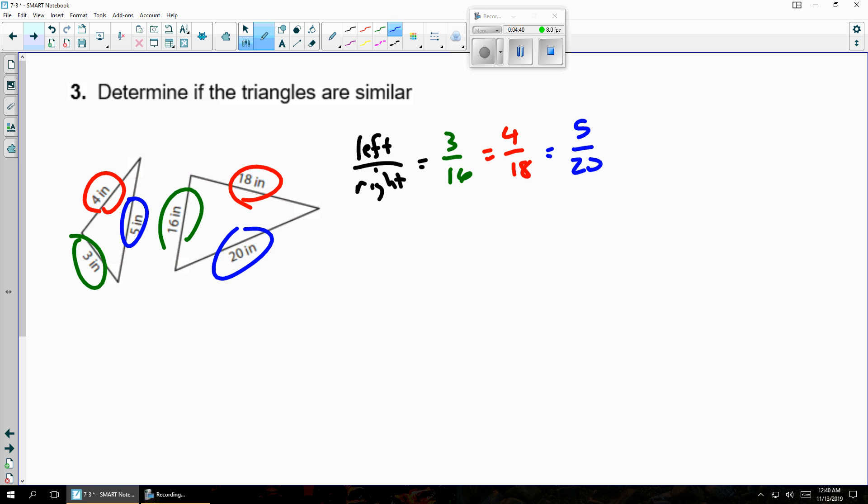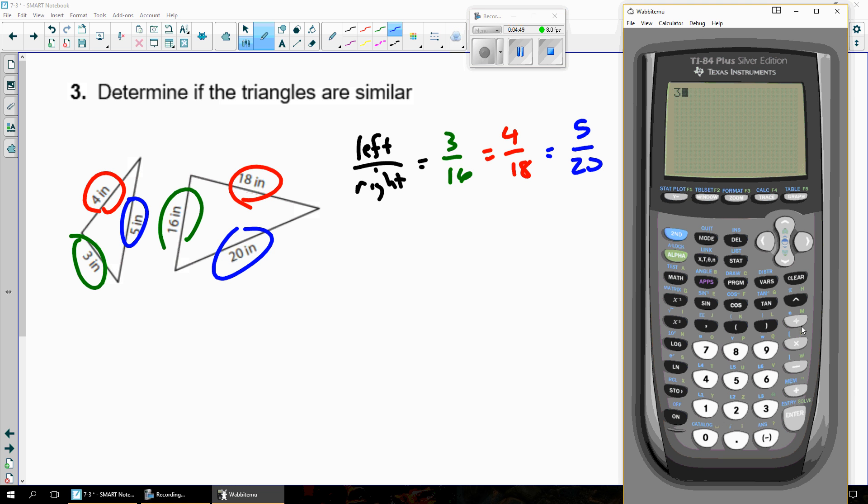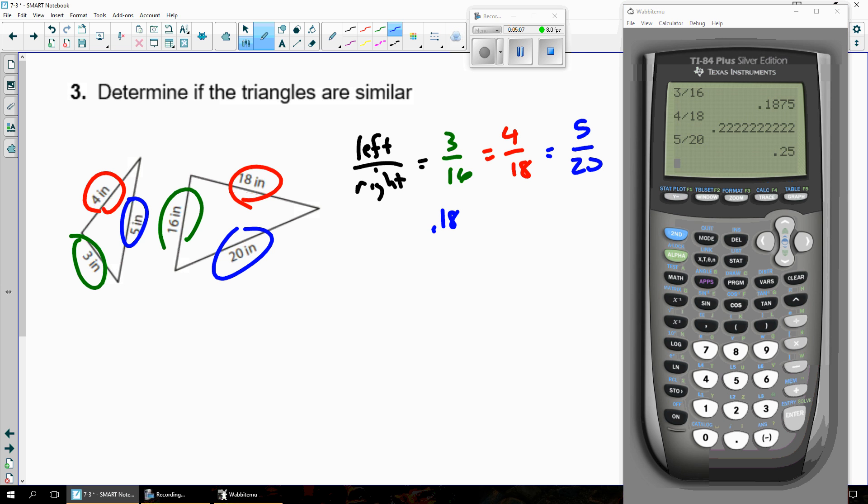And the question is, is what I just wrote true? Well, if you're not sure, you could grab a calculator and divide those things out. So this is 3 over 16. 4 over 18. That's not the same thing. And I don't even really need to do this. But I will. And we'll see that these numbers are not the same. If any one of them is different, then it's not similar. So those things are not true. No. The triangles are not similar.